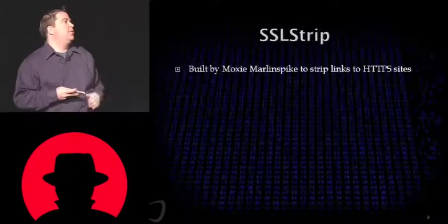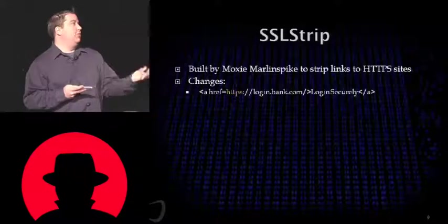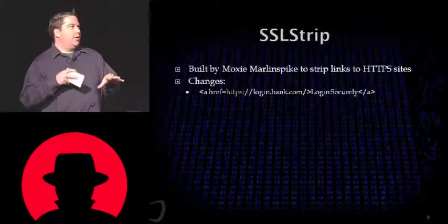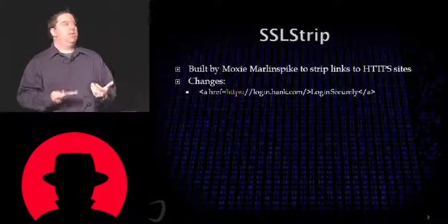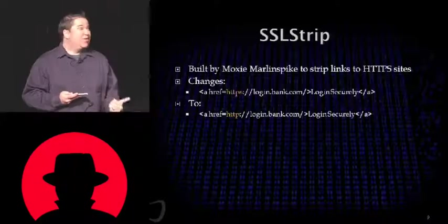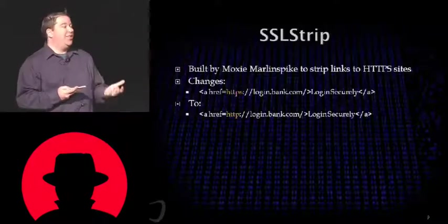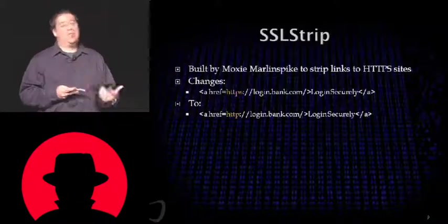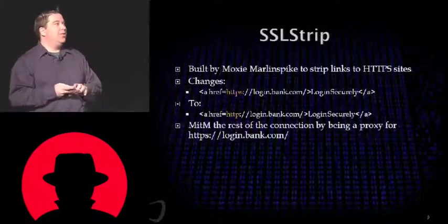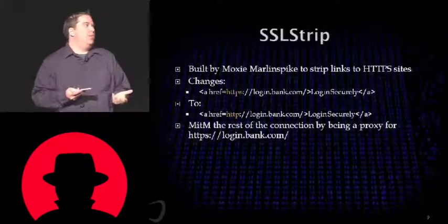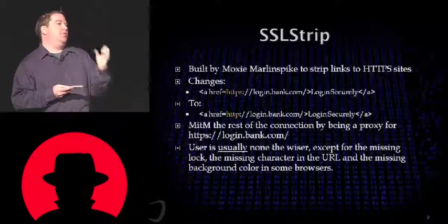One of those tools is SSL Strip, created by Moxie Marlinspike. Basically, a man-in-the-middle can pull out secure links or redirects. If you're going to a website starting at an HTTP page that has a link redirecting you to an HTTPS login page, SSL Strip can change HTTPS://login.bank.com to HTTP://login.bank.com. The user is none the wiser unless they're checking for the lock icon or a background color change. A user now has to explicitly type HTTPS in order to get to the page they want.